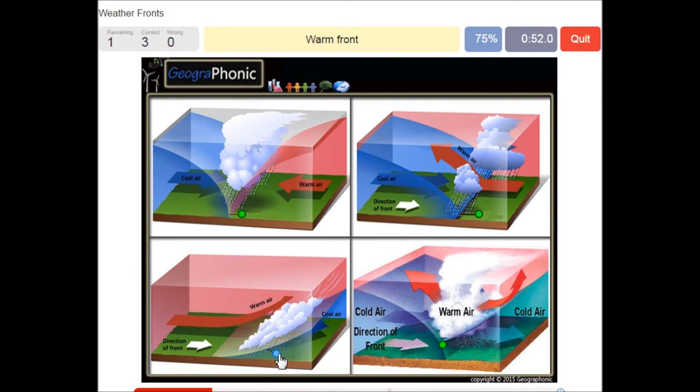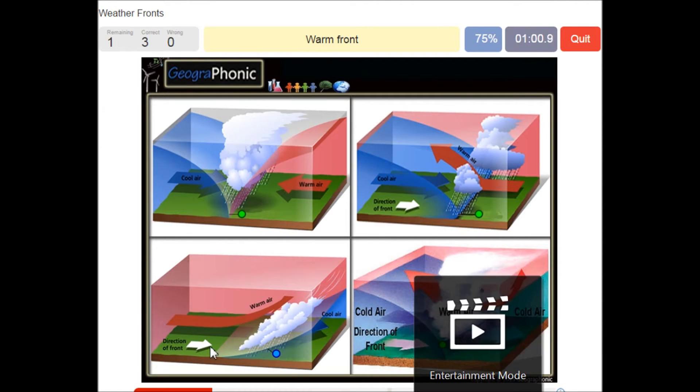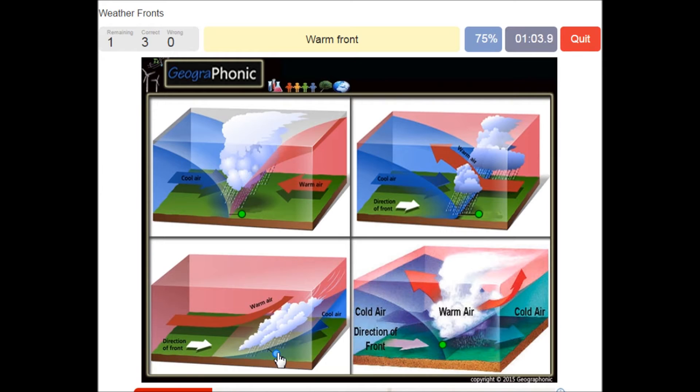Here we see a warm front. The warm air is catching up on the cool air and it rises pretty softly and causes just some small rain.